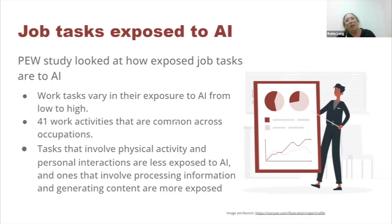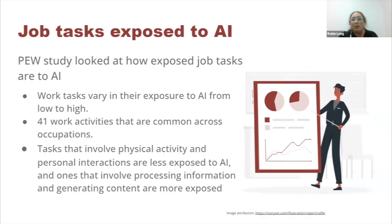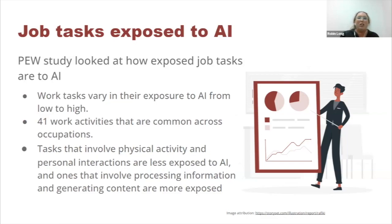In the Pew study, they said there are 41 work activities that are common across all occupations. Of these 41 activities, tasks that involve physical activity or personal interactions are the least exposed to AI, and the ones that involve processing information and generating content are more exposed to AI. Exposed just means there's going to be more disruption there — we just don't know what that disruption is yet.